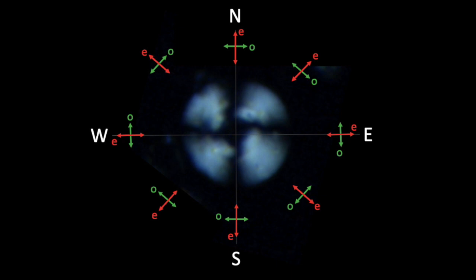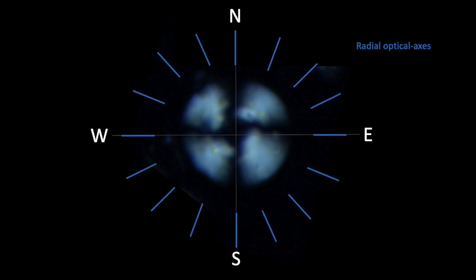And, because we know that the extraordinary ray vibrates in the plane of the optical axis, we can draw the orientation of the optical axis for the several elements. And, they all display radially. And, that's why we call these elements as R of radial units.